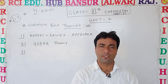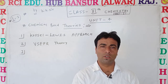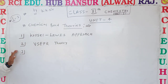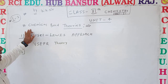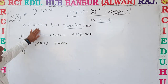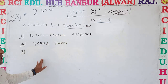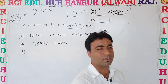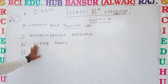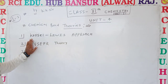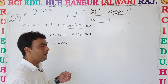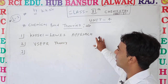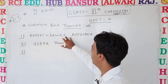Welcome, dear students, to RCI Education Hub Bansur Online Classes. Today we continue with Chapter 4, Chemical Bond, and we start Chemical Bond theories. In the previous class you already saw the types of bonds — sigma, pi, and other types. Today we see the formation of bonds as given by many scientists and chemists. First of all, the Kossel-Lewis approach, given by Kossel and Lewis.